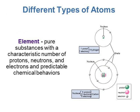You can have different types of atoms. We already saw helium and hydrogen on the previous slide. These different types of atoms are called elements. An element is a pure substance — it has a characteristic number of protons, neutrons, and electrons. Because of this, certain elements have predictable chemical behaviors. If you've taken or are going to take a chemistry class, they'll talk about these predictable chemical behaviors, but for now just know that they can behave in certain ways.